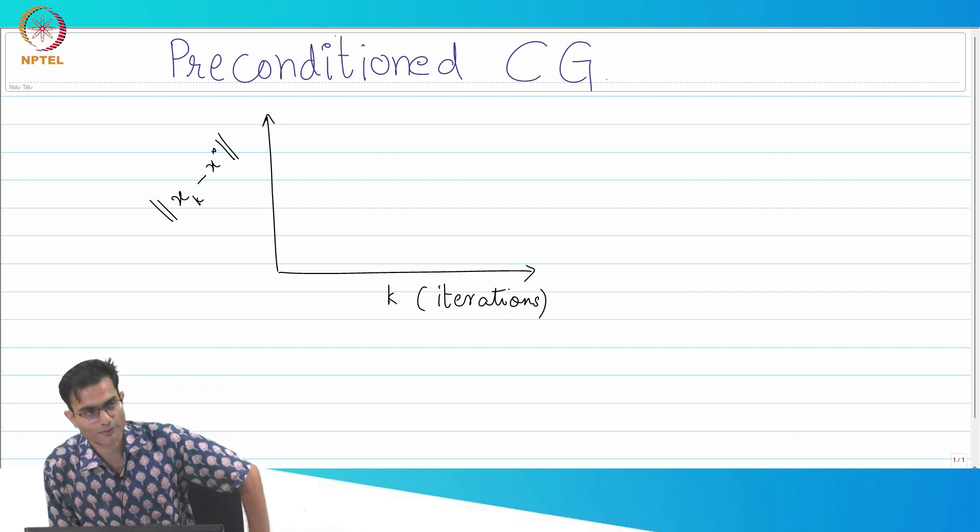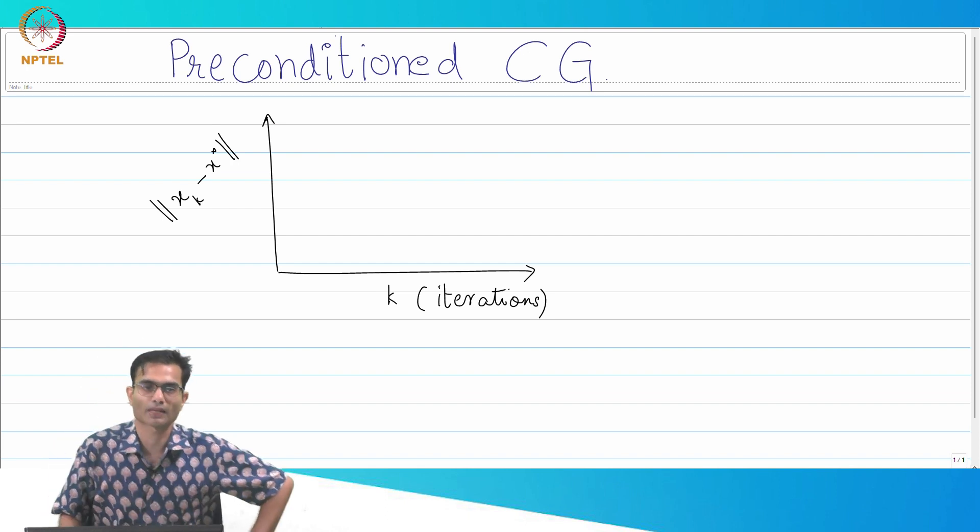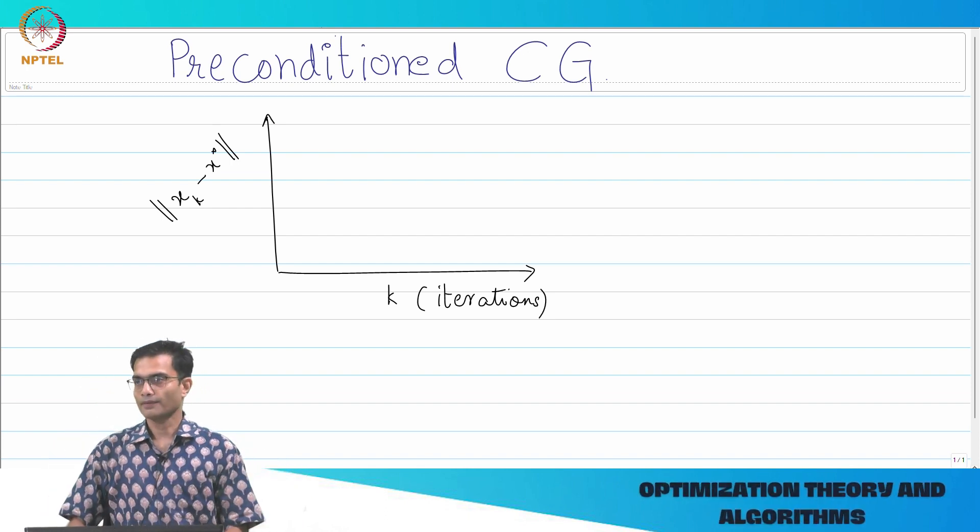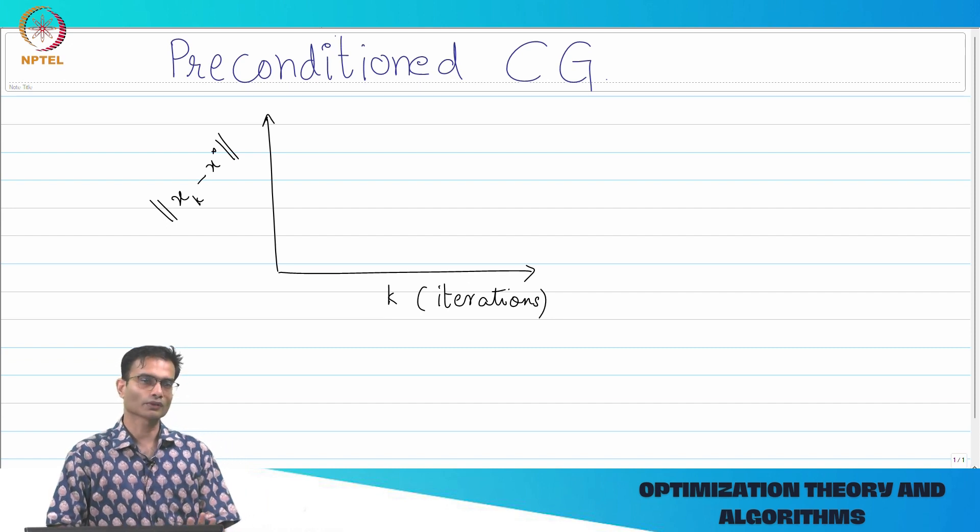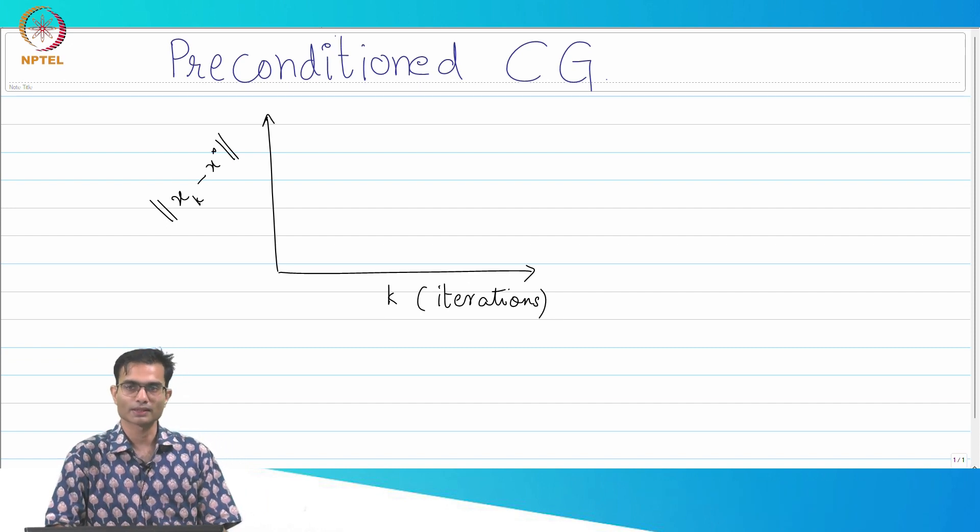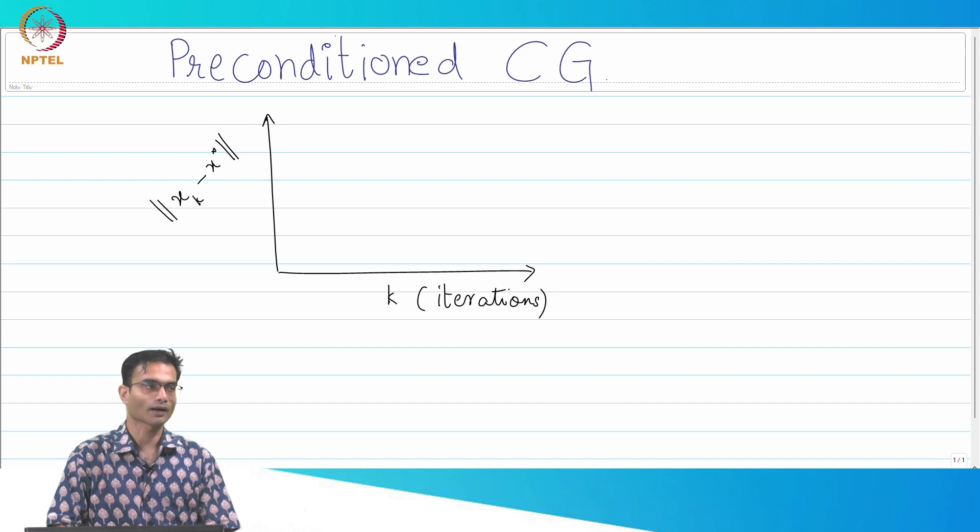I'm going to draw an approximate graph. Let's say that we're very happy with our CG method and we want to study how does it behave with condition number? We know that it's going to get worse as the condition number increases, but how worse?